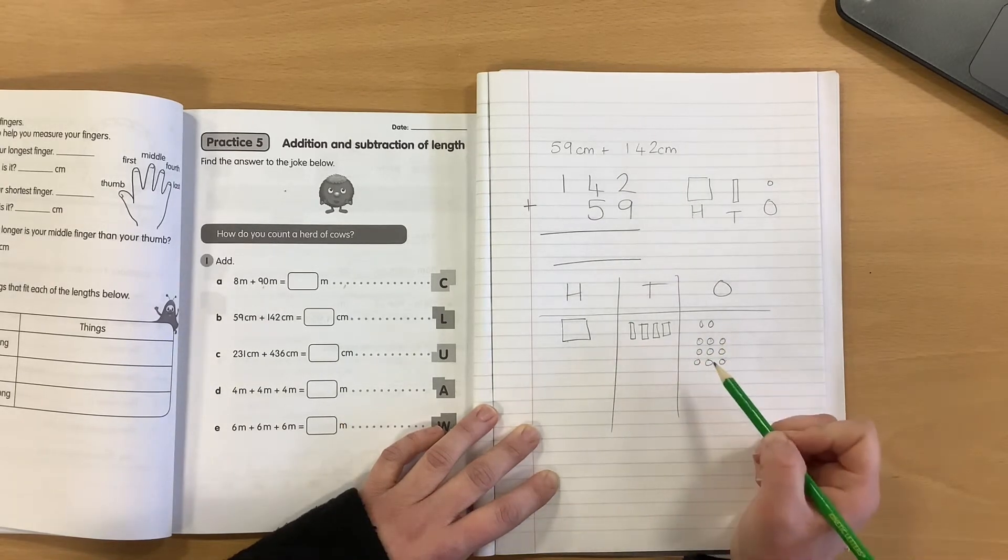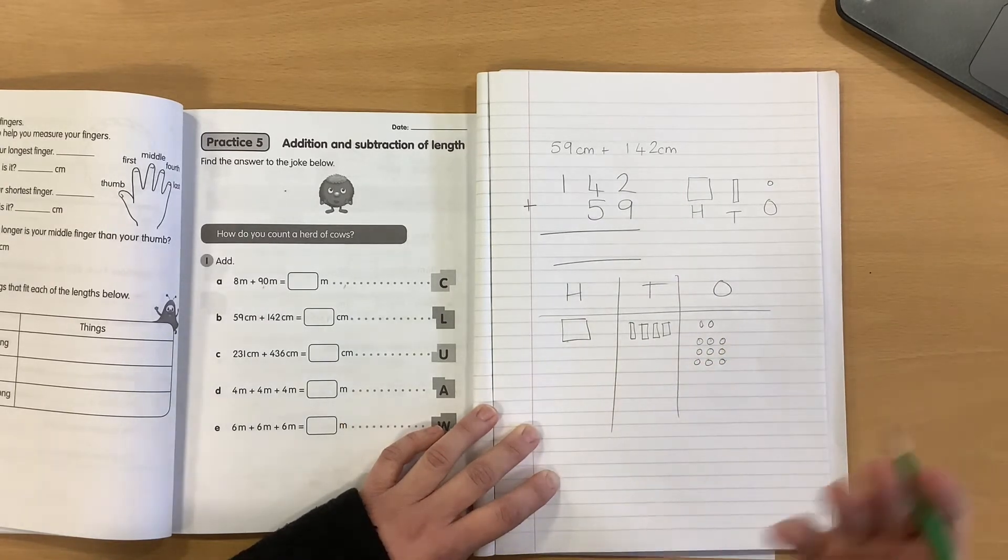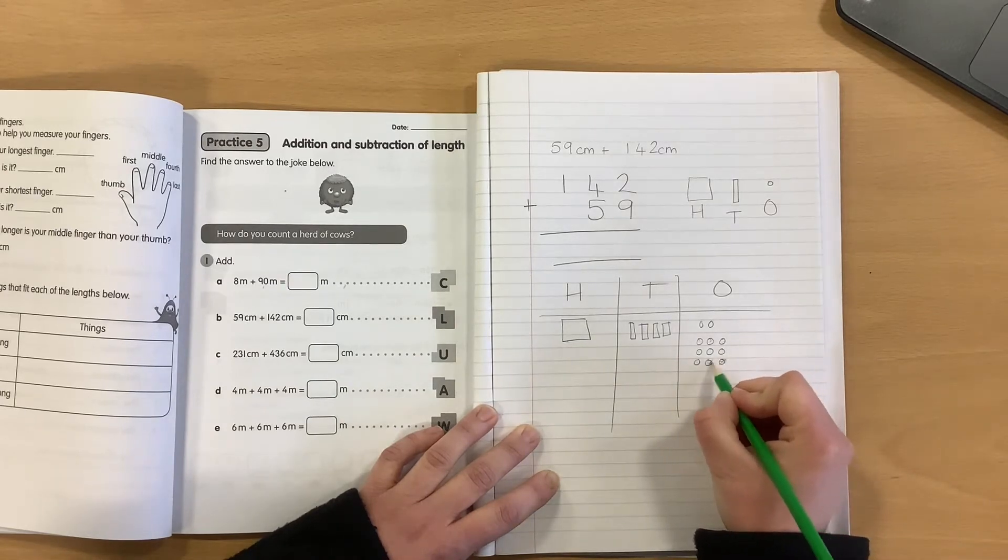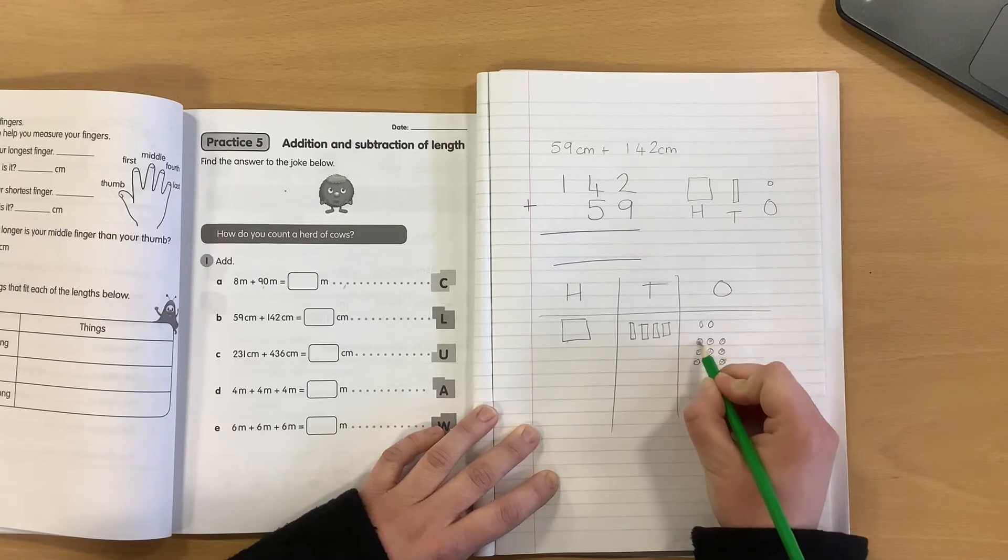I am going to count out now my ones until I reach my ten ones. One, two, three, four, five, six, seven, eight, nine, ten.